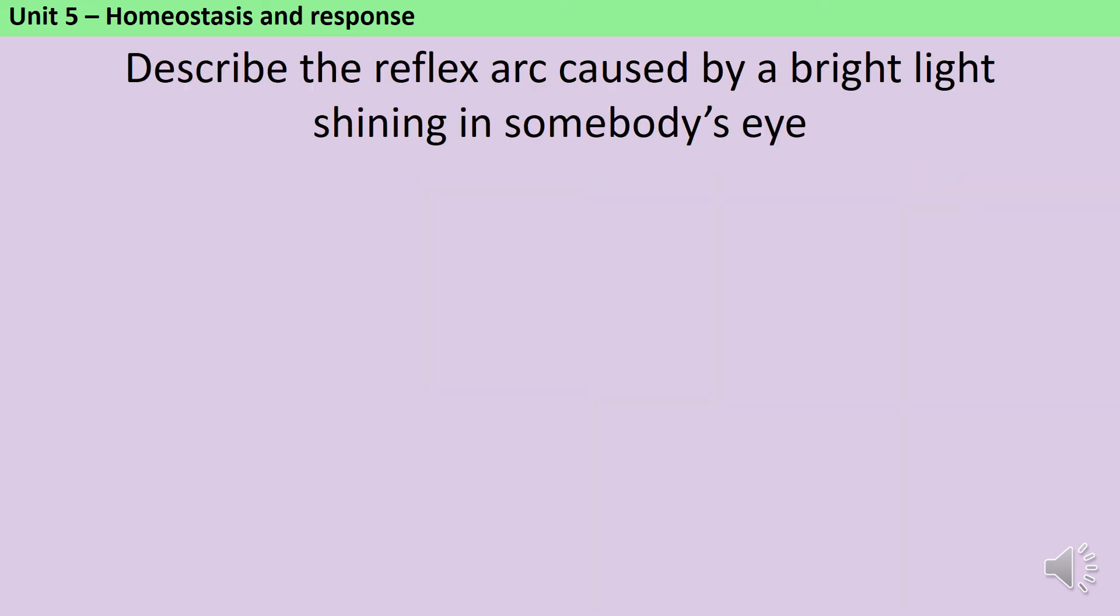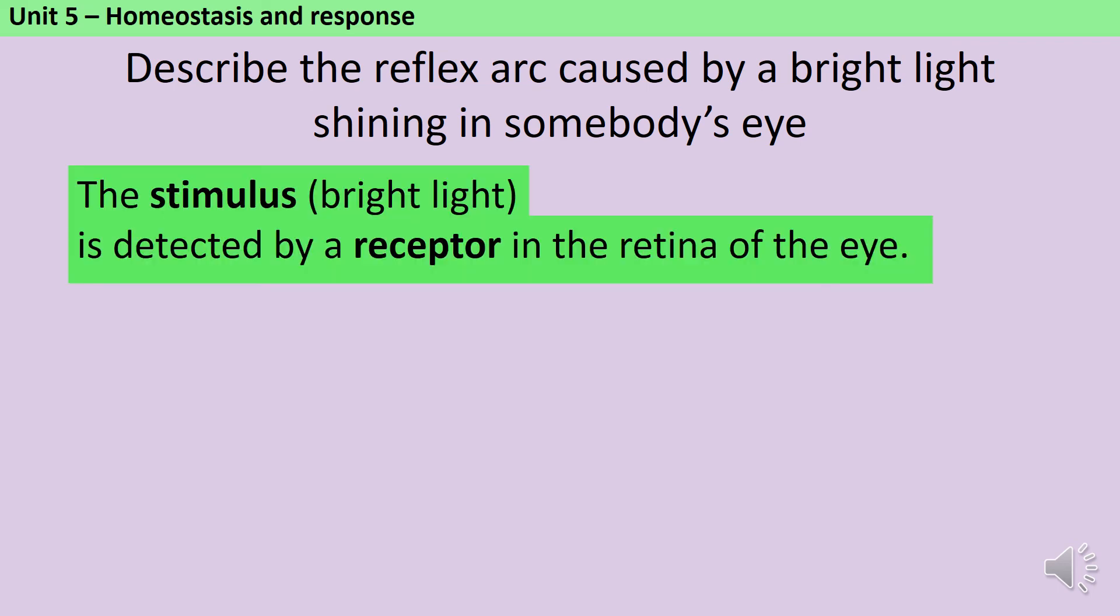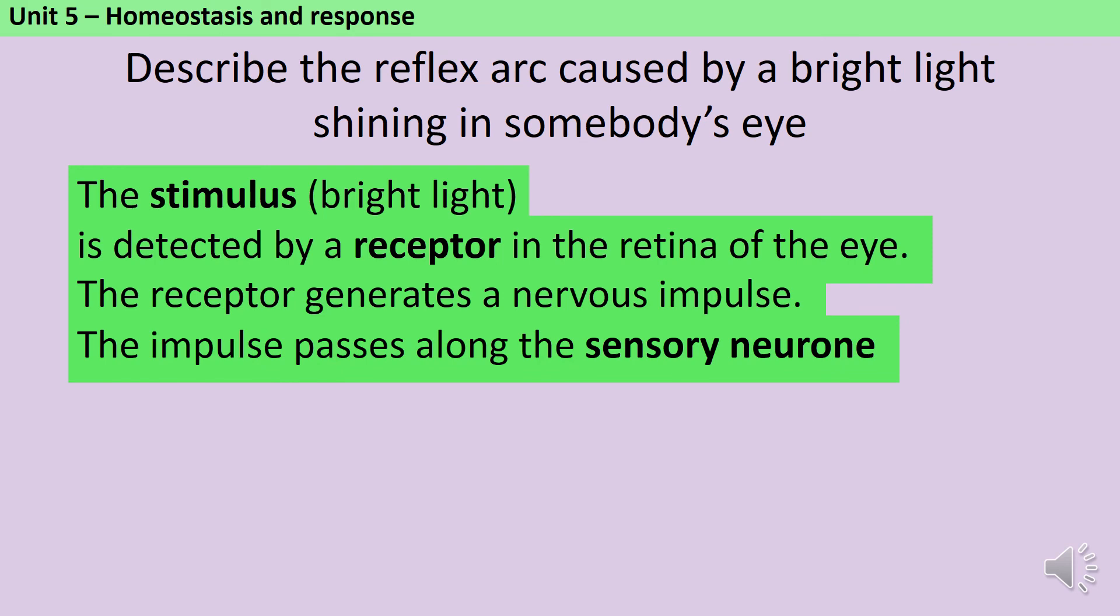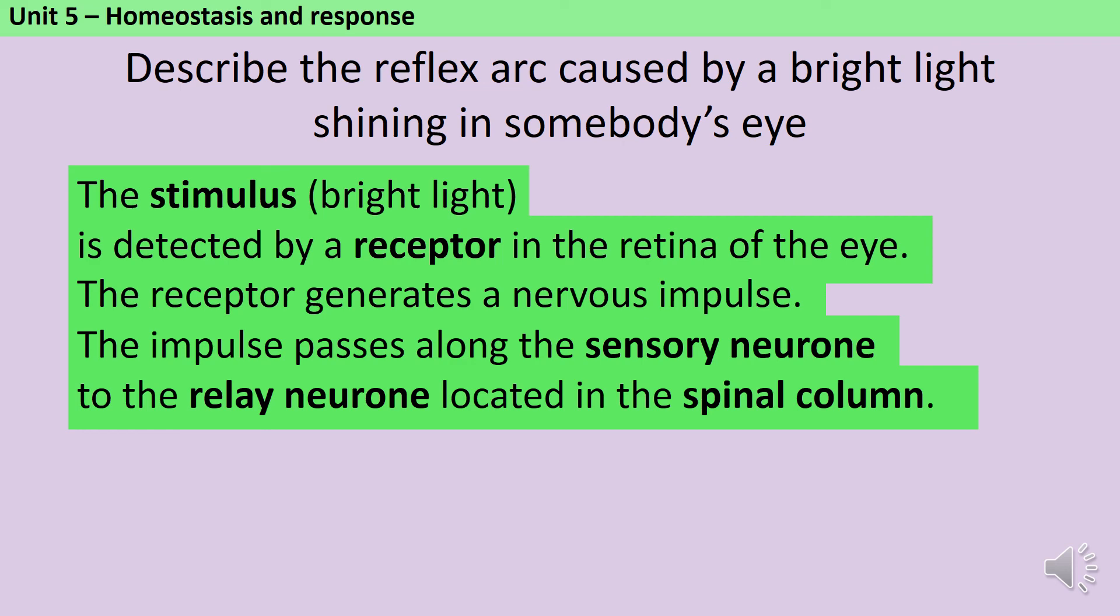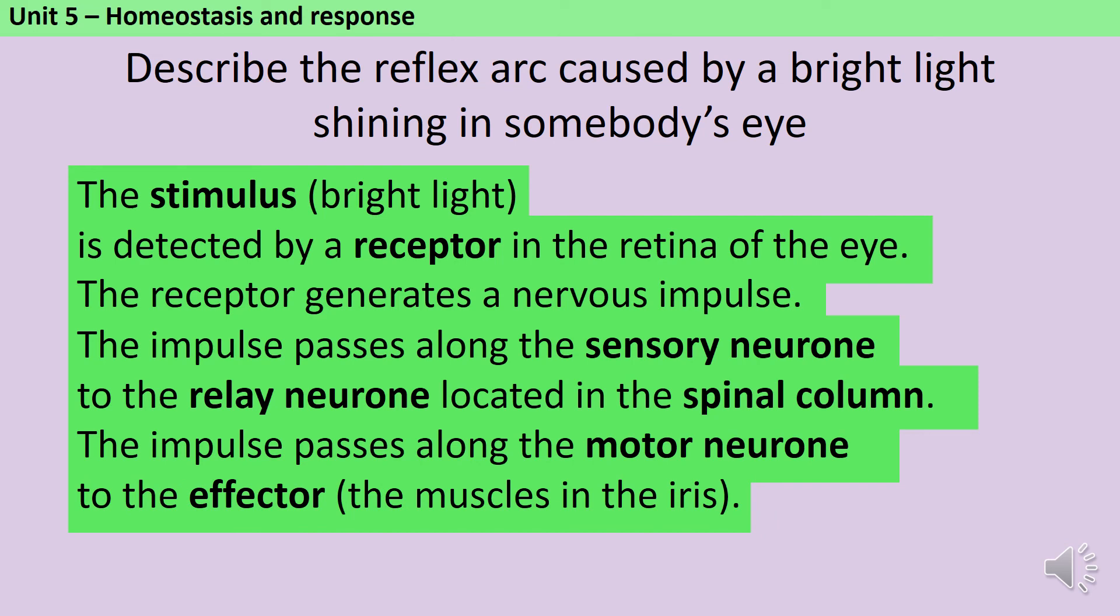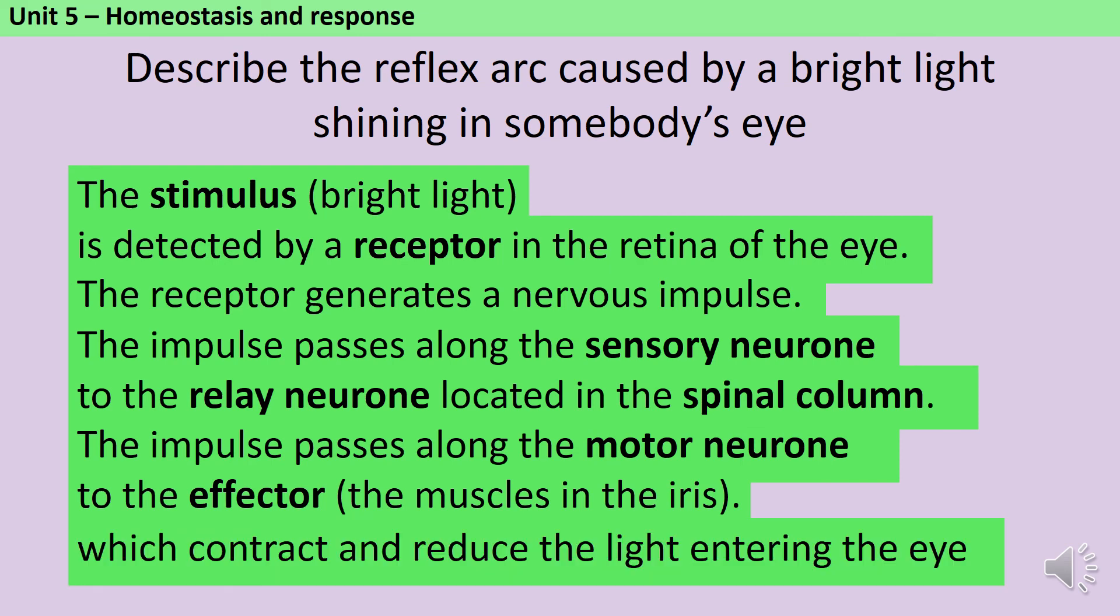Here's an example for you to have a go at. Pause the video and see if you can write down the steps in the reflex arc. When a bright light is shone in somebody's eye, there's a stimulus, which is the bright light, which is detected by the receptor, the cells in the back of the retina of the eye. The receptors generate a nervous impulse, which passes along the sensory neuron. It goes to the relay neuron, which is located in the central nervous system. The impulse then passes along the motor neuron, until it gets to the effector, which is the muscle in the iris, that colored ring around your pupil. These muscles contract, and this reduces the light entering the eye.